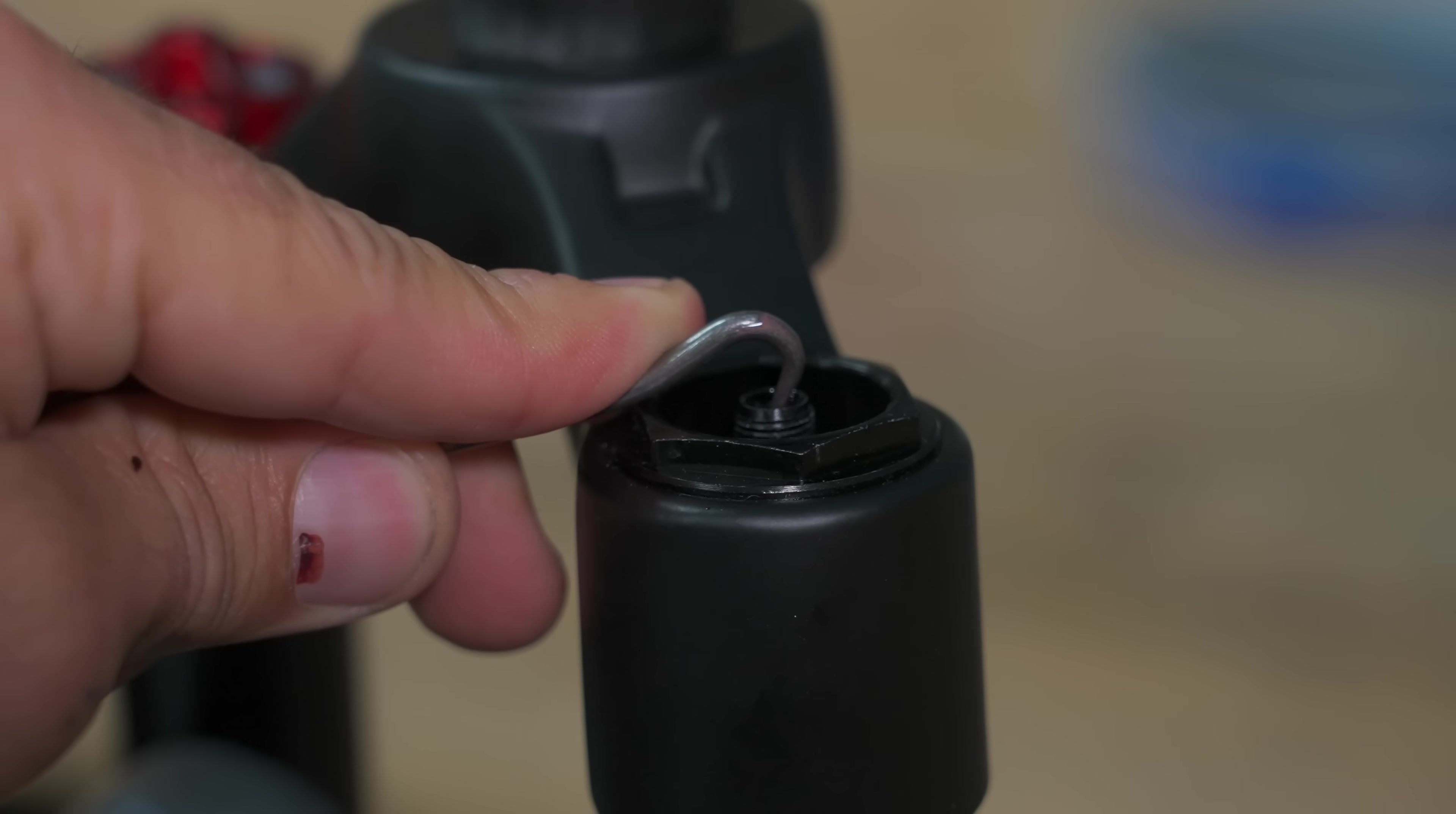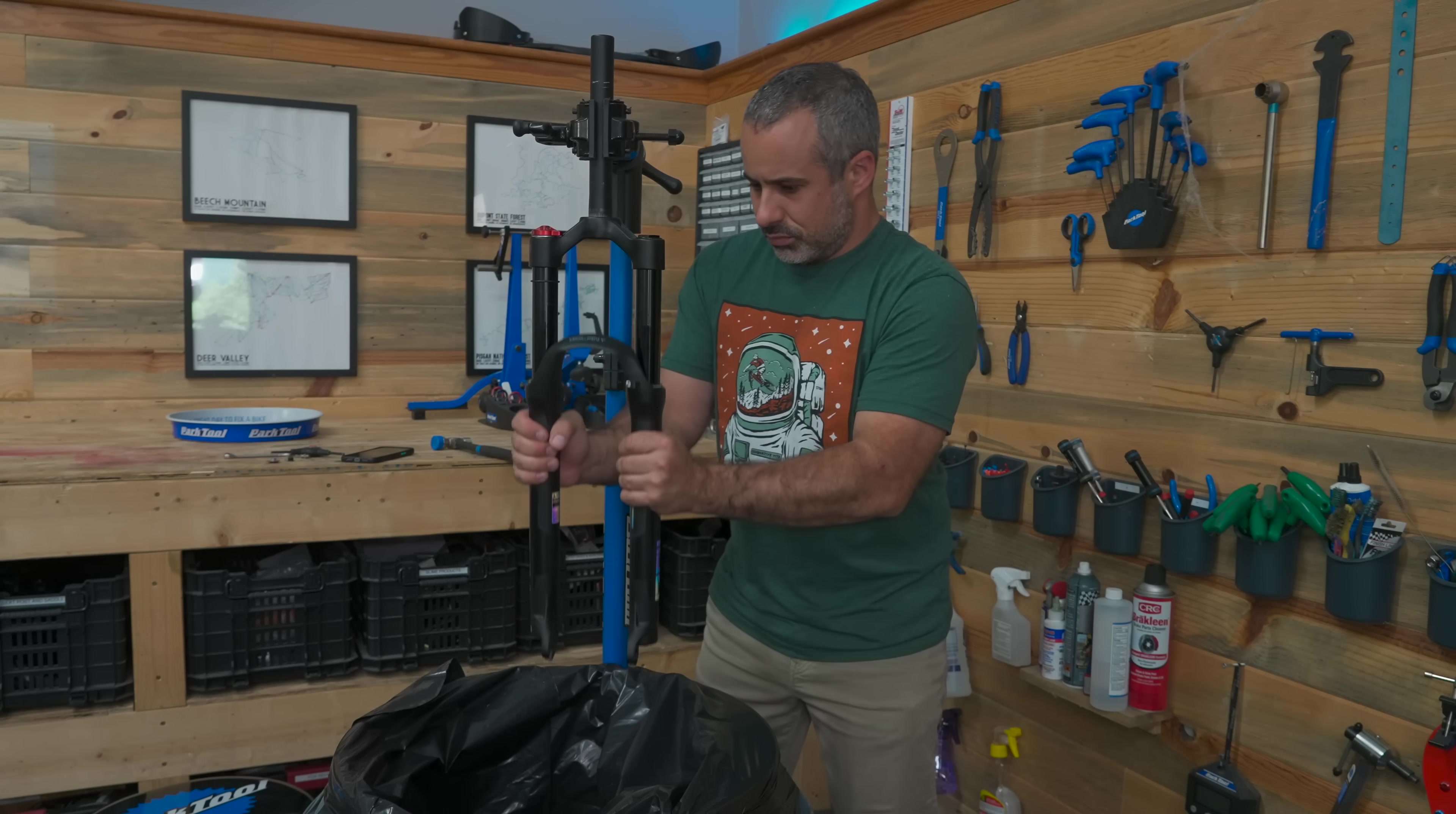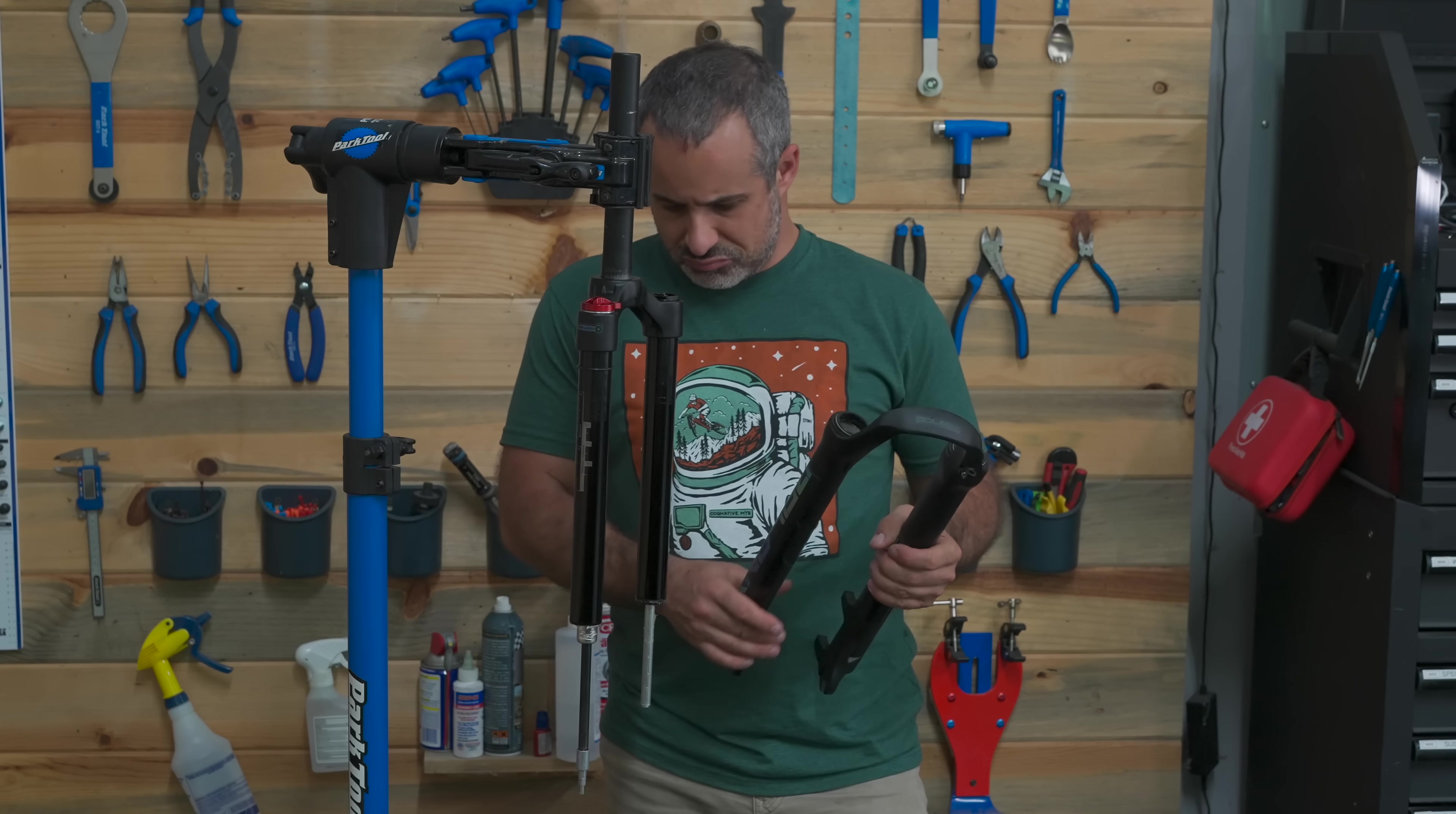But first, we're going to tear one down, see what it's made of, and then put it in the smasher and make sure the steerer tube is up to the task. So let's put this on the stand, drop the lowers, and see what's inside of it.